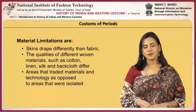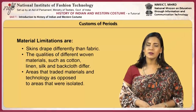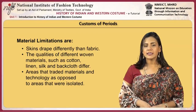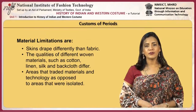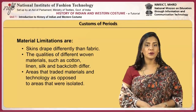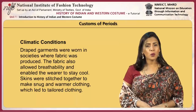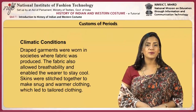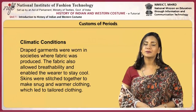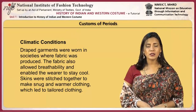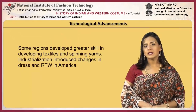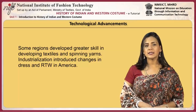Clothes, however, have a number of limitations. The main limitation is that skin drapes differently than fabric. The qualities of different woven materials such as cotton, linen, silk and bark cloth differ. Areas that traded materials and technology differ from areas that were isolated. Draped garments were worn in societies where fabric was produced, and the fabric also allowed breathability and enabled the wearer to stay cool. Skins were stitched together to make snug and warmer clothing, which led to tailored clothing. Some regions developed greater skill in developing textiles and spinning yarns.